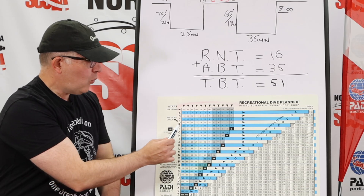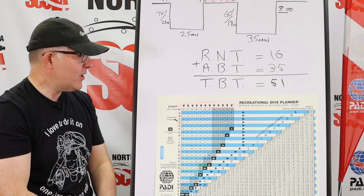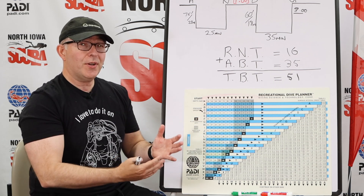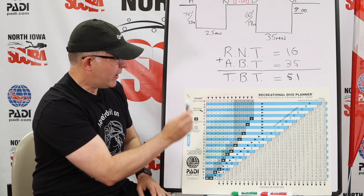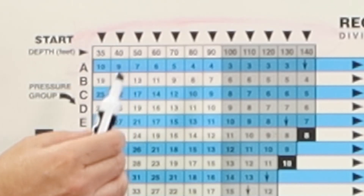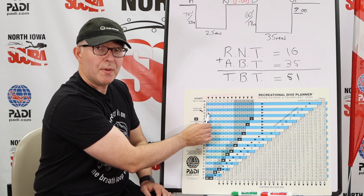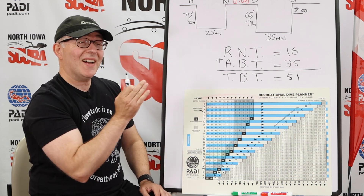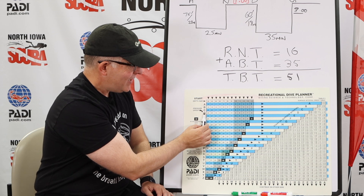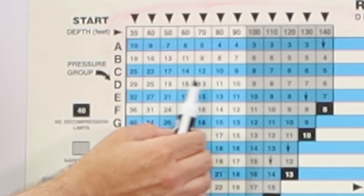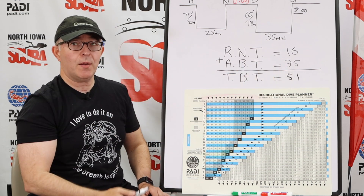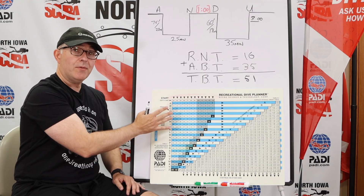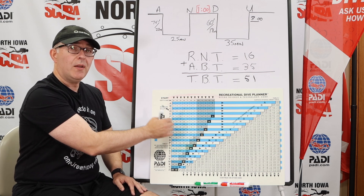That was the hard way — now the easy way. Have you ever wondered why the numbers in Table 1 don't follow any particular sequence? That's because they represent your residual nitrogen time for any pressure group at any depth. You can do this example without having to flip to Table 3. Using D as the example: if the next dive was to 35 feet, 29 minutes would be the residual nitrogen time; at 40 feet, 25 minutes, and so on. In our example, diving to 60 feet, we find D and come across to 60 — the residual nitrogen time is 16 minutes, the same number from Table 3. With an actual bottom time of 35 minutes, our total bottom time would be 51 minutes. You can use Table 1 directly to figure out residual nitrogen time for subsequent dives.